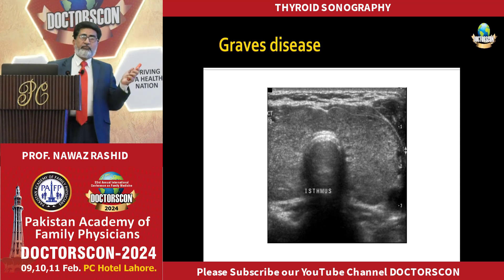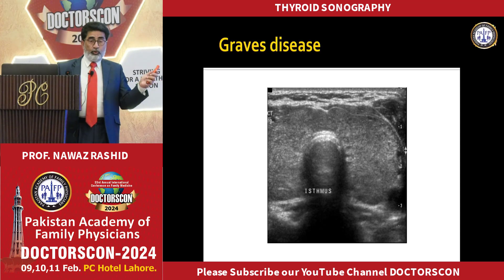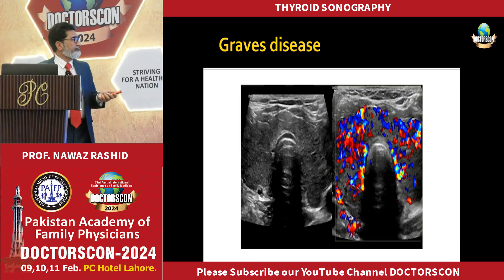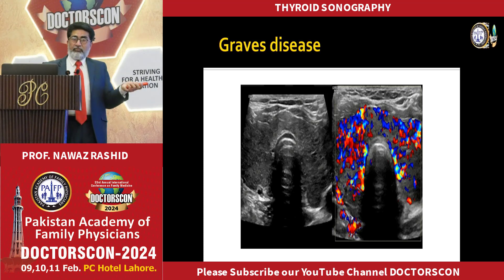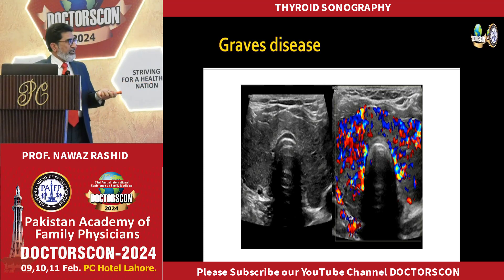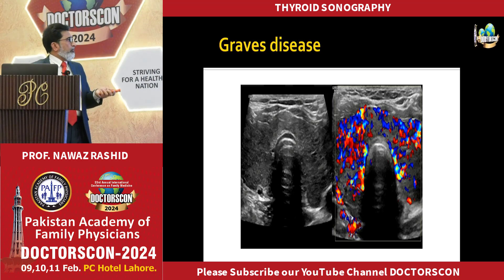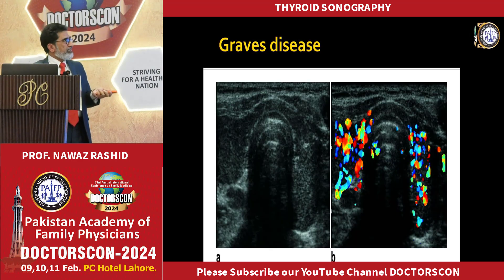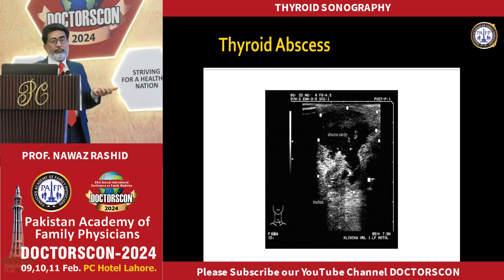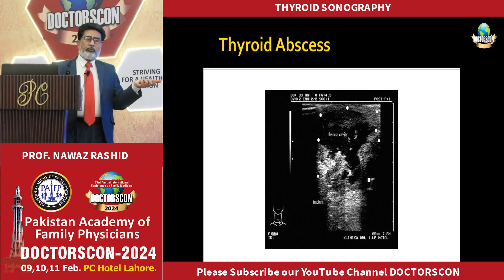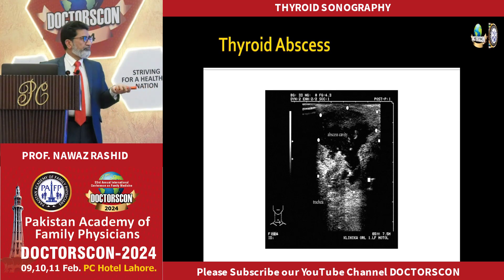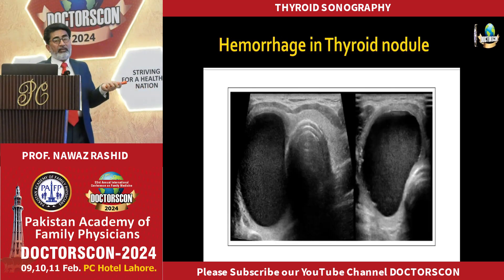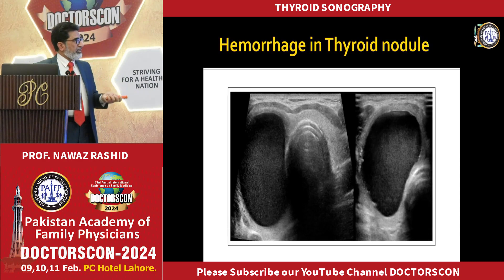Diffuse enlargement of both the right and left lobes. If you do Doppler, there is increased blood flow — this is consistent with Graves' disease. There is also a case of thyroid abscess; you will have pain, tenderness, swelling, and signs of inflammation. If there is a hemorrhage, it will look like this — with fine internal echoes.